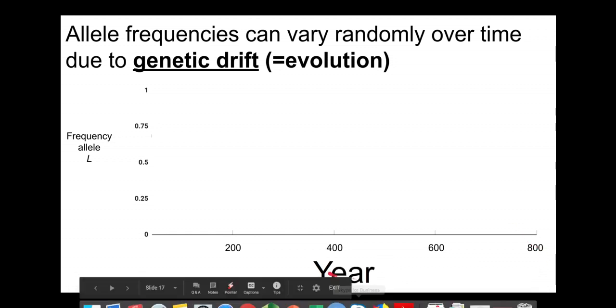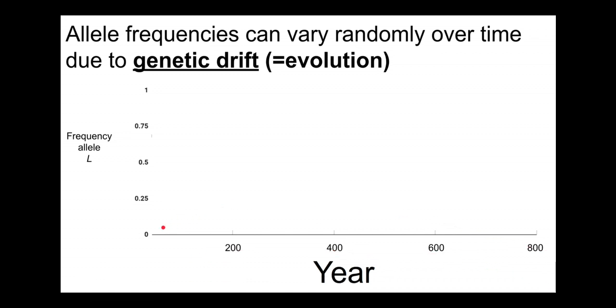The graphs in this and other presentations will have year along the bottom. We'll say that we're caring about a process of about 800 years. And the y-axis here is the frequency of the L allele. We'll start out at 0.625 over here. And I just randomly made up some data where the frequency of the allele is increasing over time here.